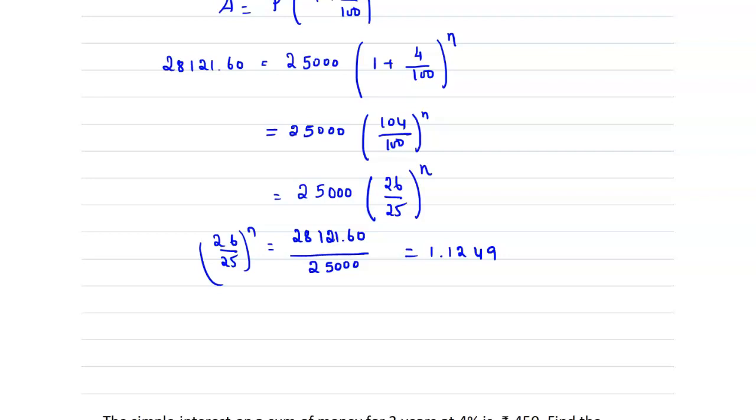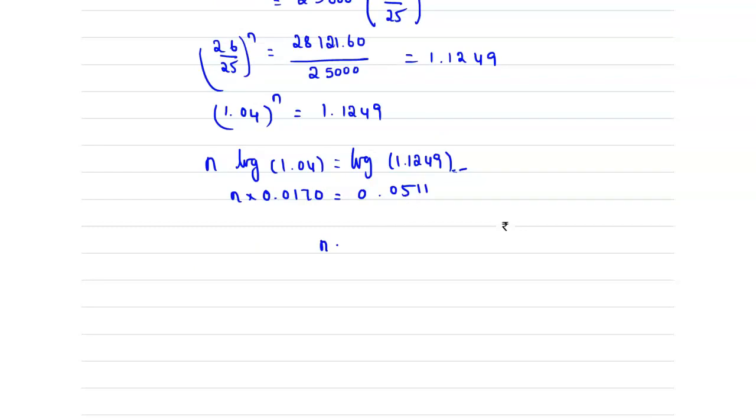26 divided by 25 is 1.04, so now we have 1.04 raised to the power n equals 1.1249. Now take log on both sides, so you will get n times log of 1.04 equals log of 1.1249. Log of 1.04 is 0.0170, which equals log of 1.1249 is 0.0511.